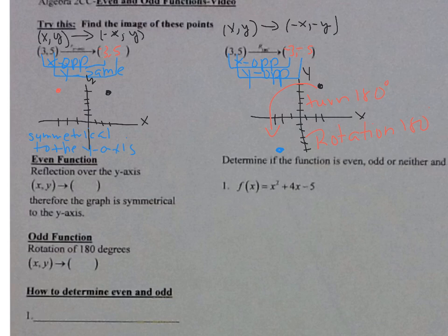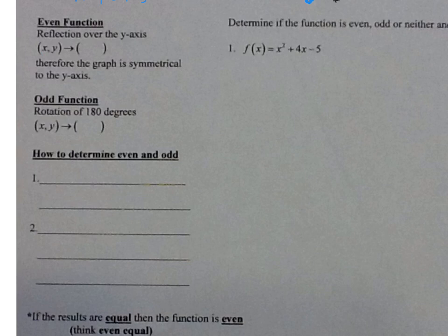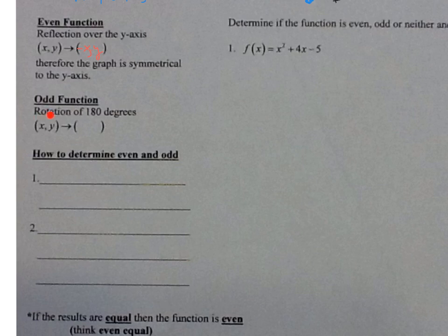Here are some quick notes: an even function is a reflection over the y-axis, so xy becomes (negative x, y), and the graph is symmetrical to the y-axis. An odd function is a rotation of 180 degrees, so xy becomes (negative x, negative y).